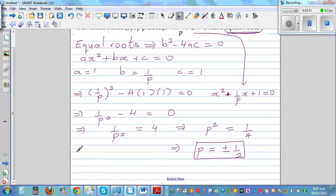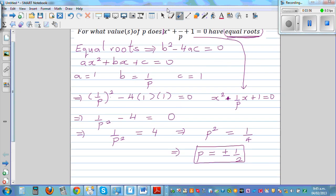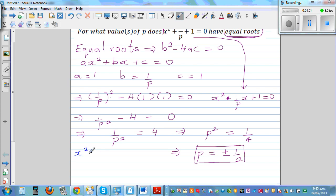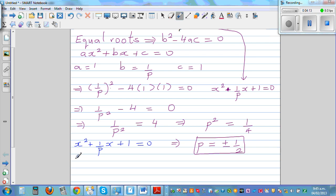So the last step is equally important, where you need to check your answer. So let me use a different color. So the equation that we got was x squared plus 1 over p x plus 1 equal to 0. So both the answers are right. So let's put p as half. So if you put p as half, this is x squared plus 1 over half x plus 1 is equal to 0.